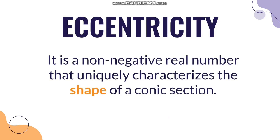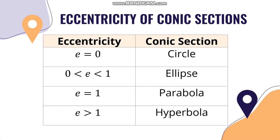We also discussed eccentricity — a non-negative real number that uniquely characterizes the shape of a conic section. If eccentricity equals 0 it is a circle; if it is between 0 and 1 it is an ellipse; if it equals 1 it is a parabola; and if it is greater than 1 it is a hyperbola. The value of eccentricity helps determine what kind of conic section we are dealing with.